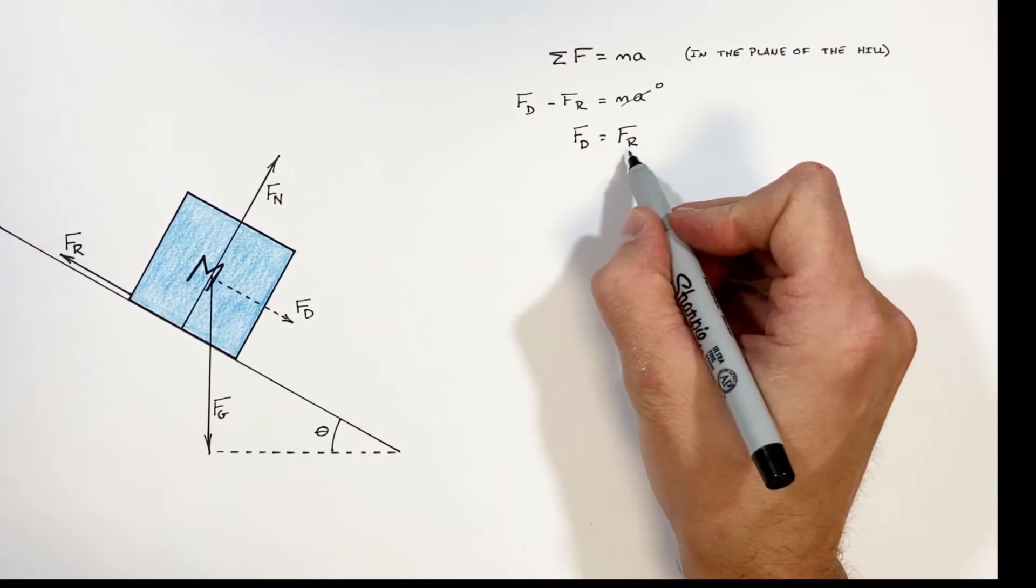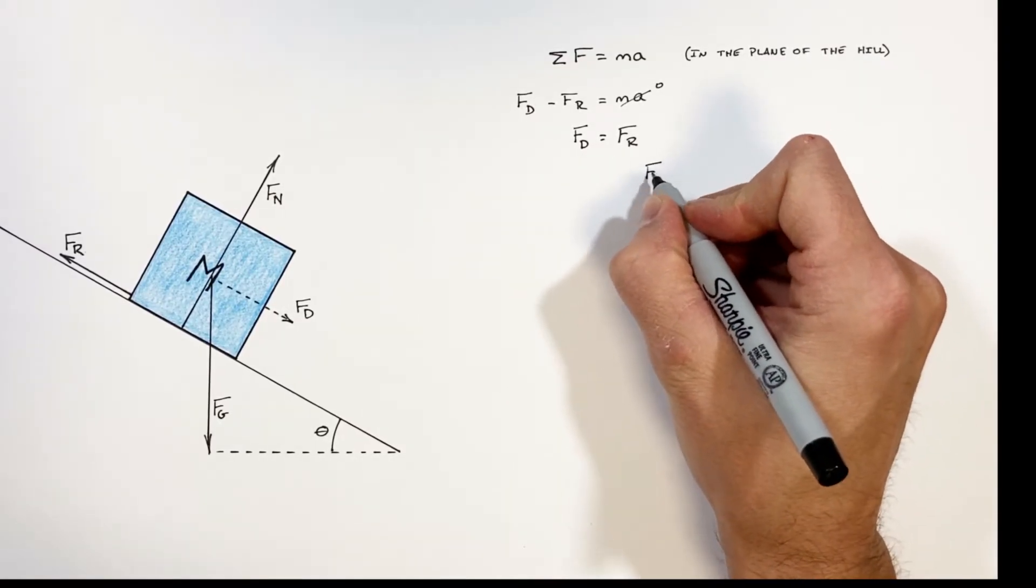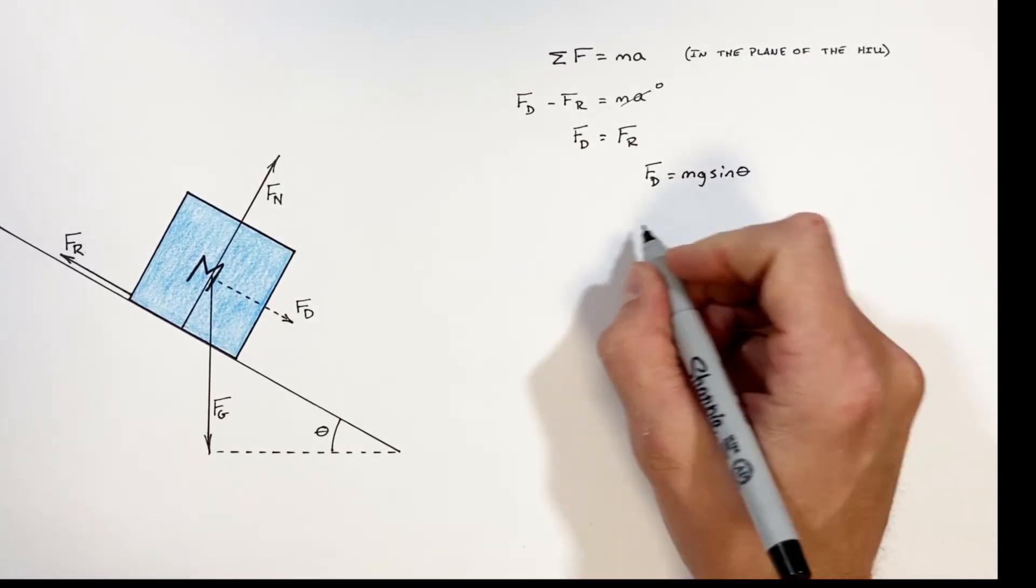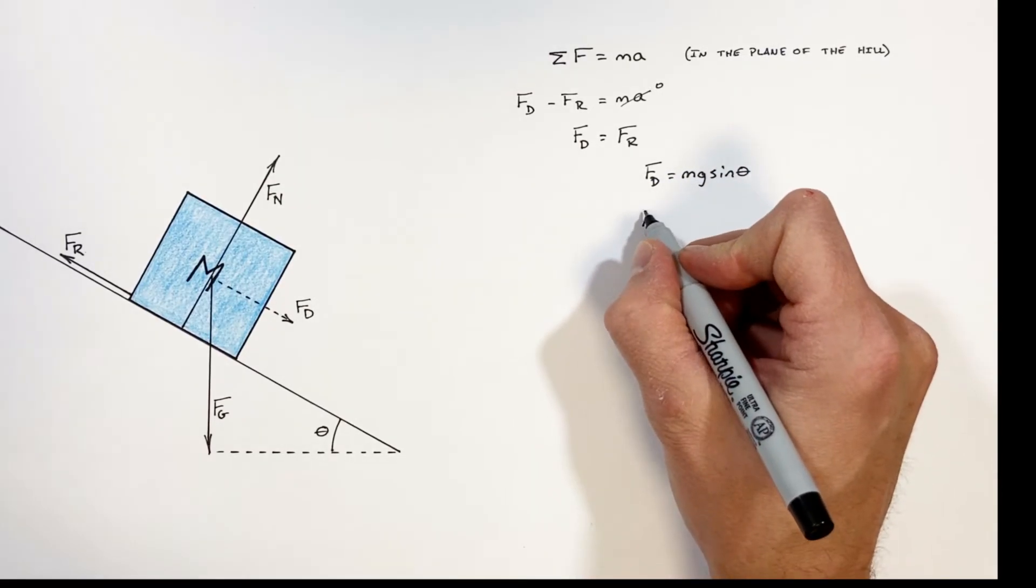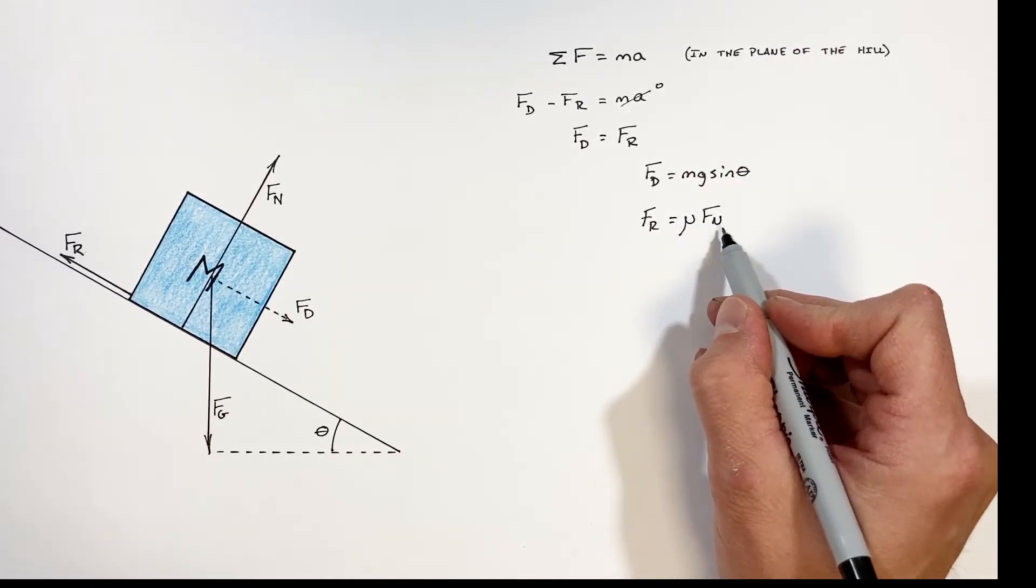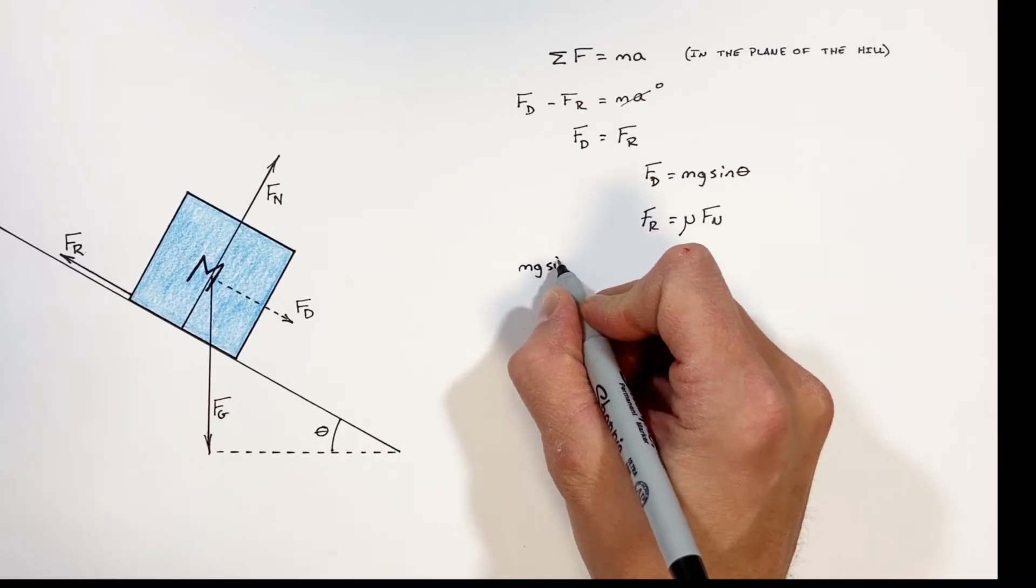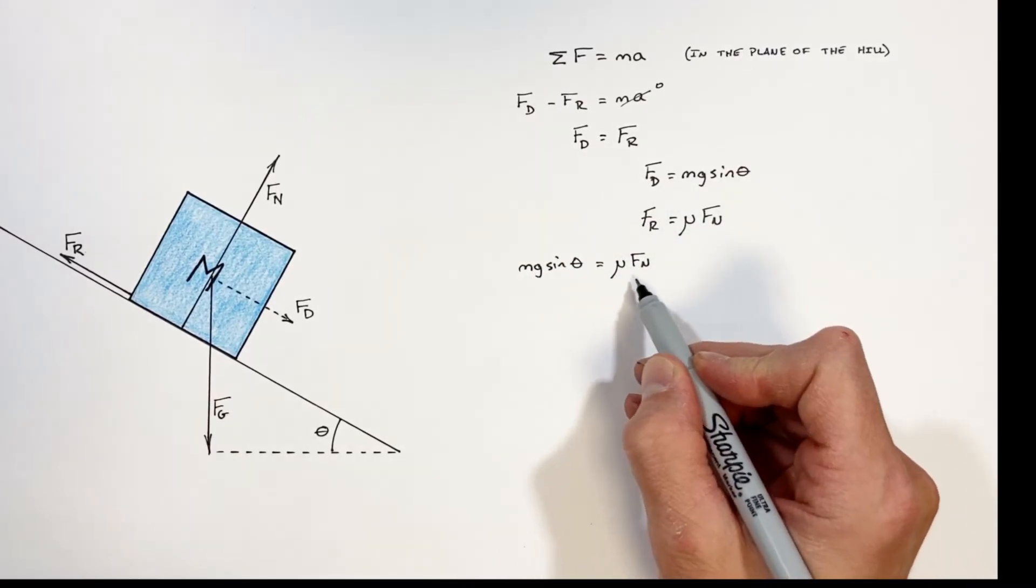Next let's expand out these two terms. We know the force down the hill is given by mg sine theta, and the friction force is given by mu fn. So substituting these terms into our equation will give us mg sine theta equals mu fn.